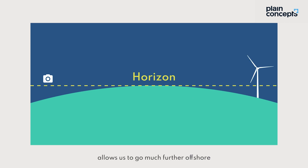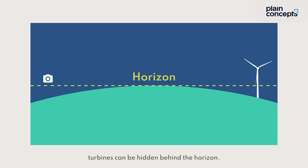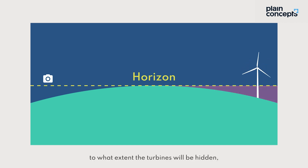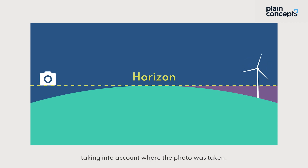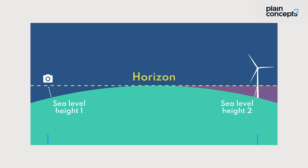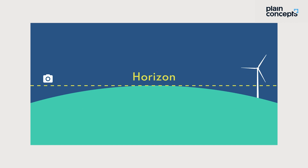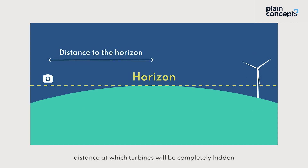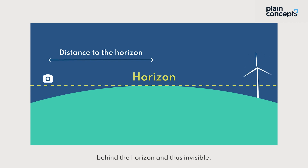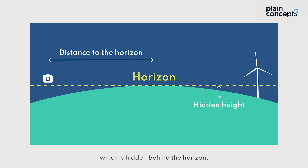As floating technology allows us to go much further offshore and the earth is not flat, turbines can be hidden behind the horizon. We need to calculate exactly to what extent the turbines will be hidden, taking into account where the photo is taken. Factoring in the height of the sea level and the distance to the turbine, we obtain critical information: the horizon distance — the distance at which turbines will be completely hidden behind the horizon and thus invisible — and the hidden height, the exact segment of the turbine which is hidden behind the horizon.